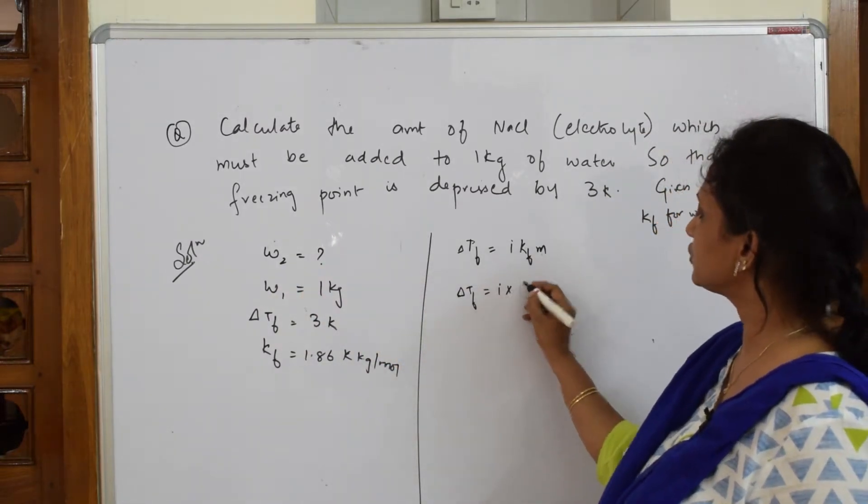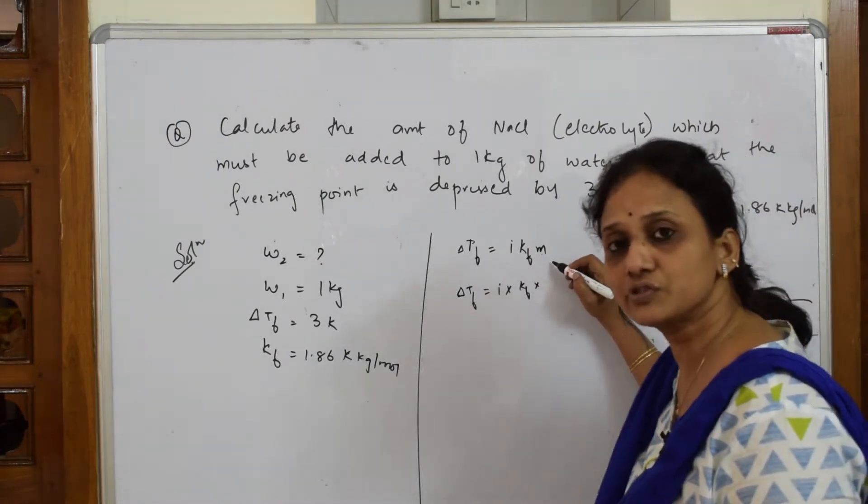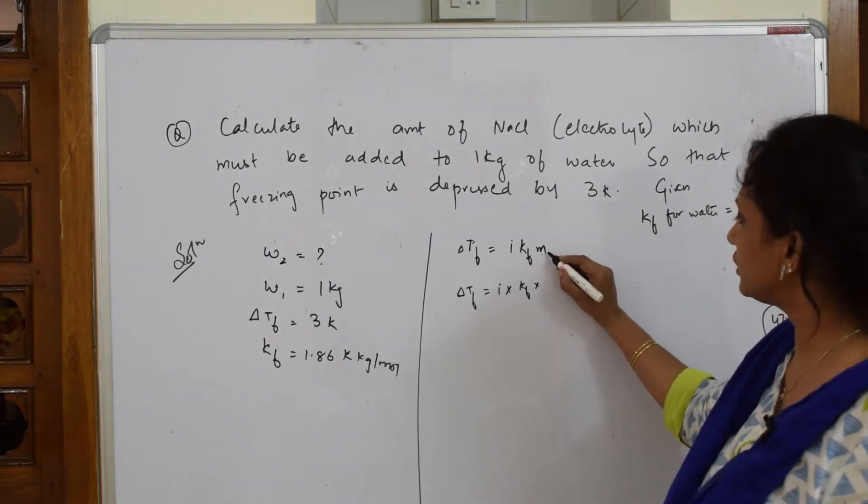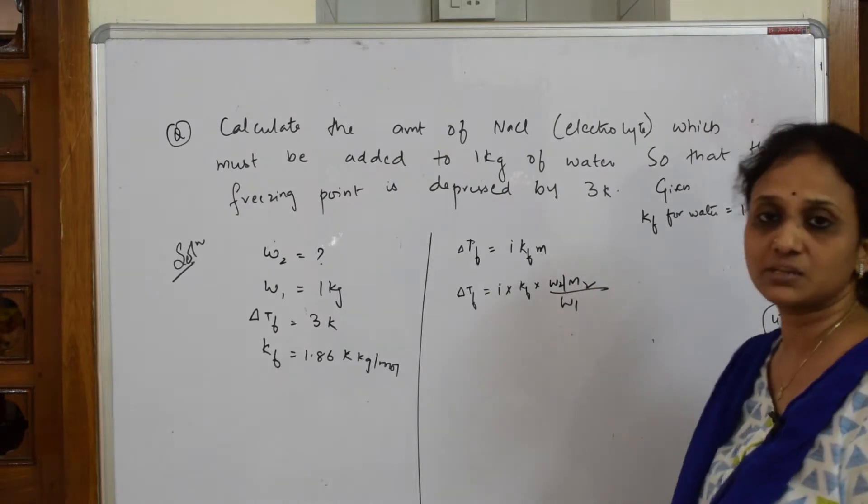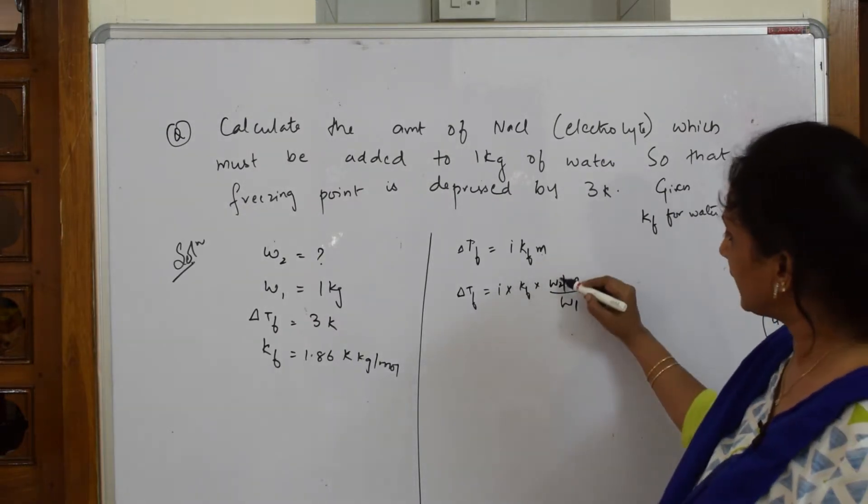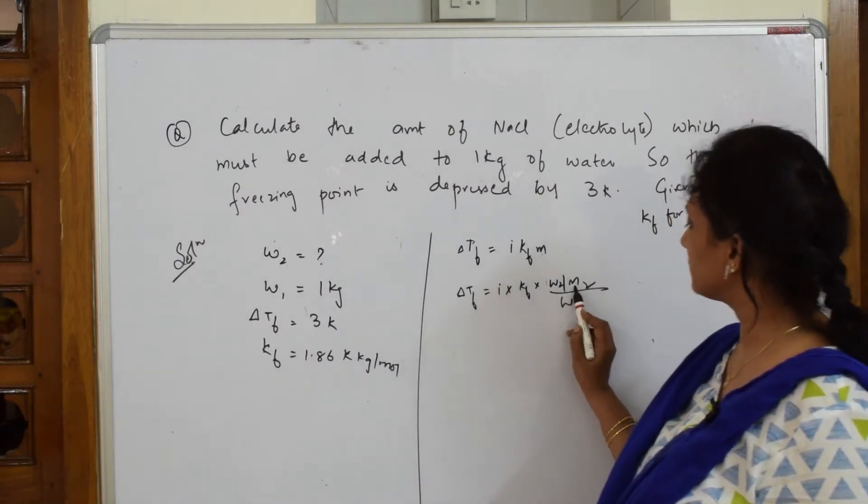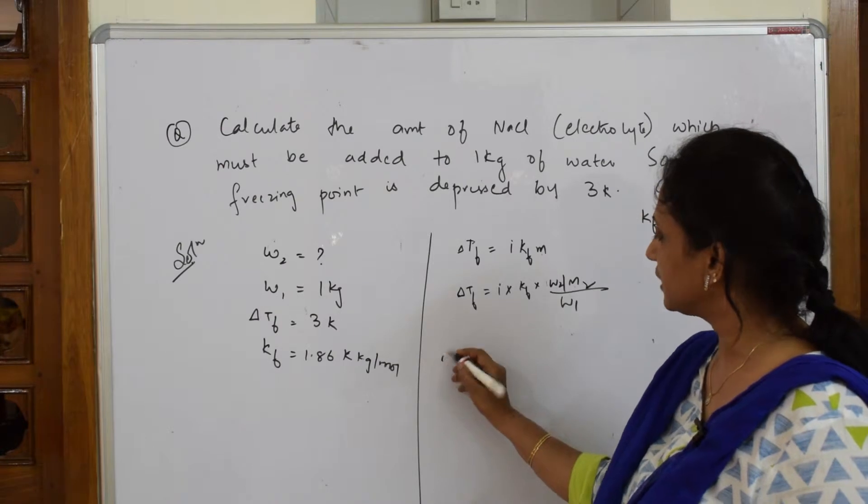ΔTf is equal to i into Kf into molality, which is nothing but number of moles of the solute dissolved by 1 kg of the solvent. So solute I'm going to take as w2 by m2 divided by weight of solvent w1. Now what should I find out? I have to find this quantity w2, number of moles of solute weight by molecular weight. Let us take this out first. Let us substitute.